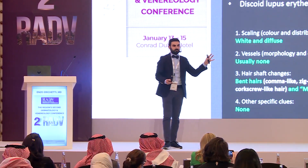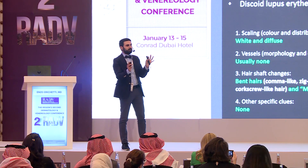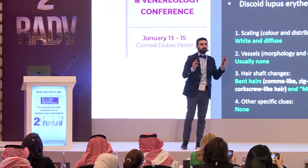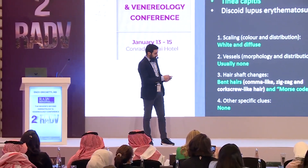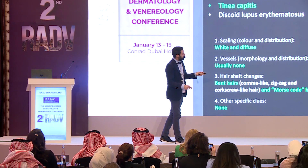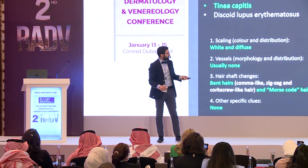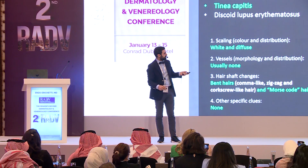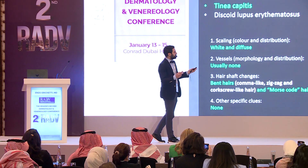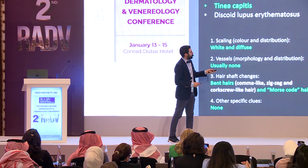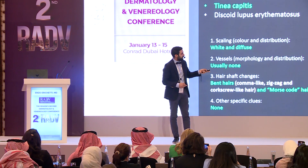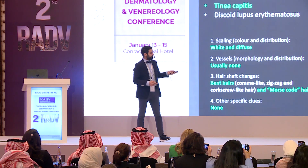Tinea capitis: the trichoscopy of tinea capitis is very clear-cut. We mainly have hair shaft changes — bent hairs, mainly corkscrew-like hairs and comma-like hairs. We also have another quite characteristic finding: Morse-code-like hair, with white bands. This is quite specific.